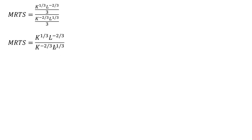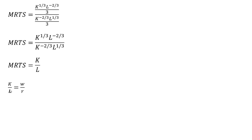This simplifies quite nicely following the rules of exponents and will just equal K divided by L. Bringing K to the minus 2/3 up into the numerator gives K to the 2/3 times K to the 1/3, and adding those exponents gives just K. Similarly, bringing L to the minus 2/3 down into the denominator gives L to the 2/3 times L to the 1/3, leaving just L in the denominator. So our marginal rate of technical substitution is K divided by L.